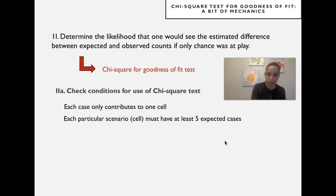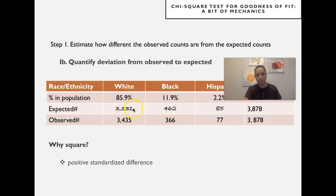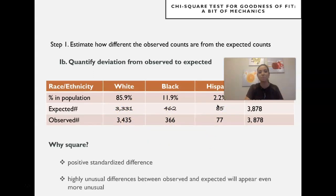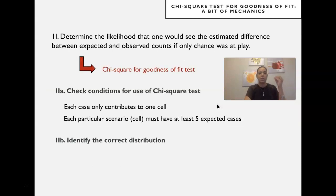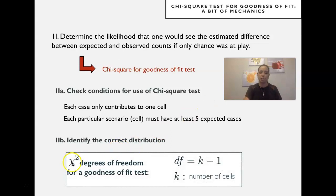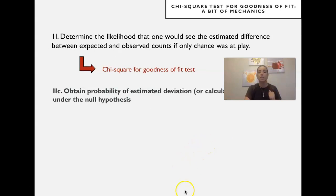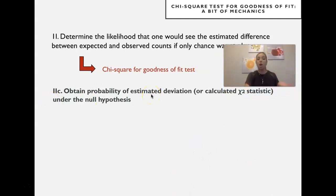Each cell must have at least five expected cases. When you compute the expected cases, each cell should have more than five. Looking at our expected counts, each cell has way more than five. Then we need to identify the correct chi-square distribution, which varies depending on degrees of freedom. To compute the degrees of freedom, you take the number of cells — in this case three, for three race/ethnicities — and subtract one, giving us two degrees of freedom.